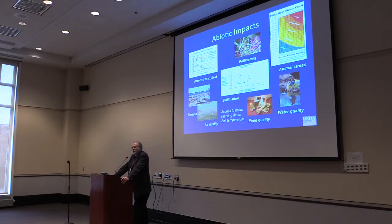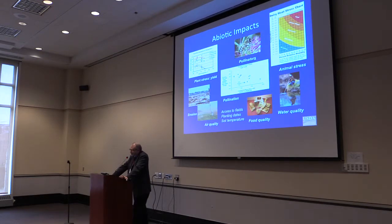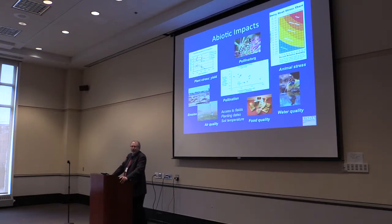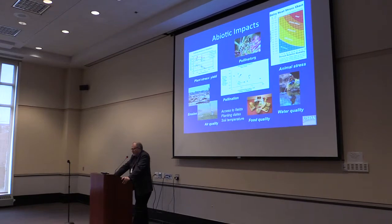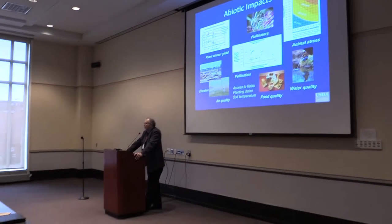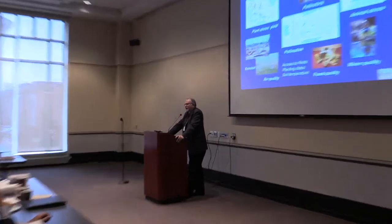Water quality — obviously water is very important for agriculture. All the erosion from these increased intense rainfall events is something agriculture has been dealing with for a long time and is starting to make some serious progress on. Food quality — there are some studies that looked at the impact of changing temperature and drought stress on the quality of food. There are some changes going on, and this is something that needs a lot of additional research. We're seeing some beneficial aspects and some detrimental aspects.